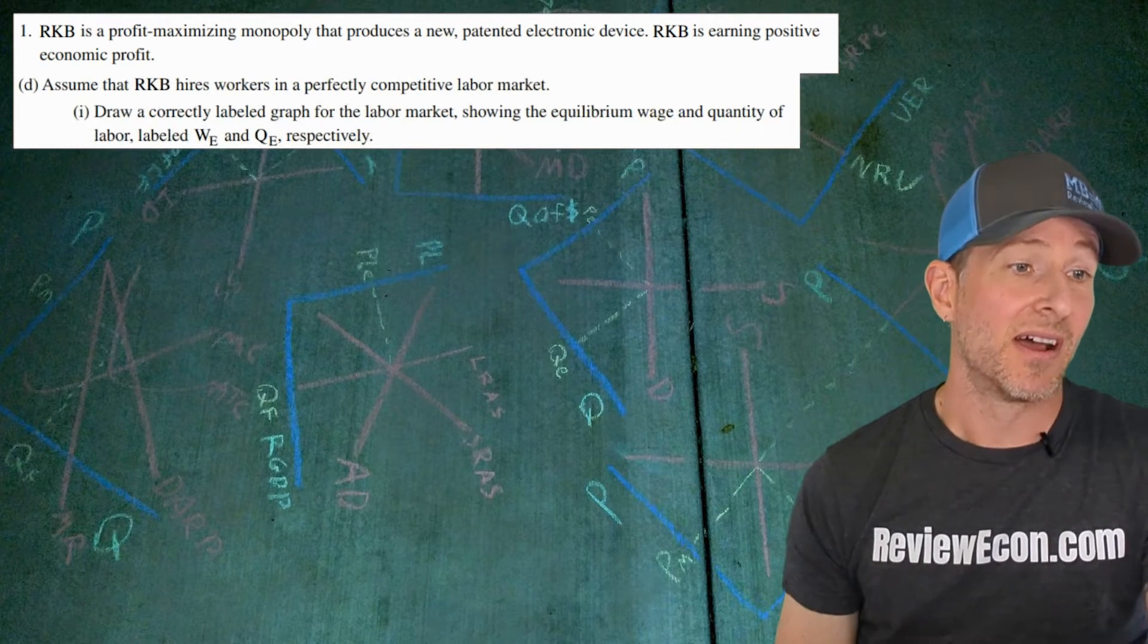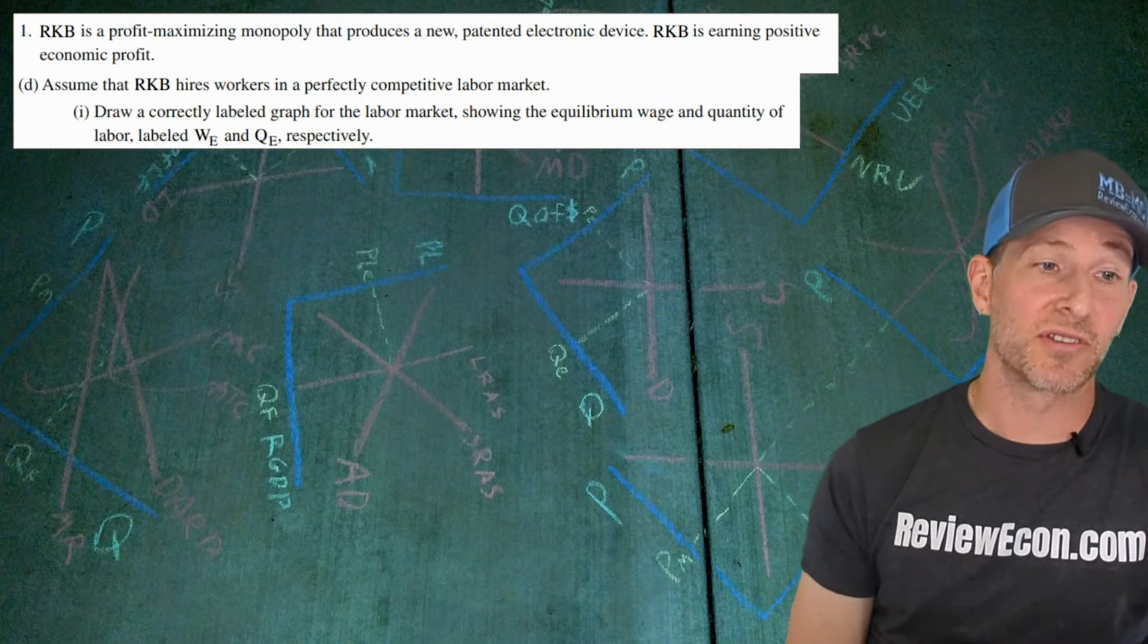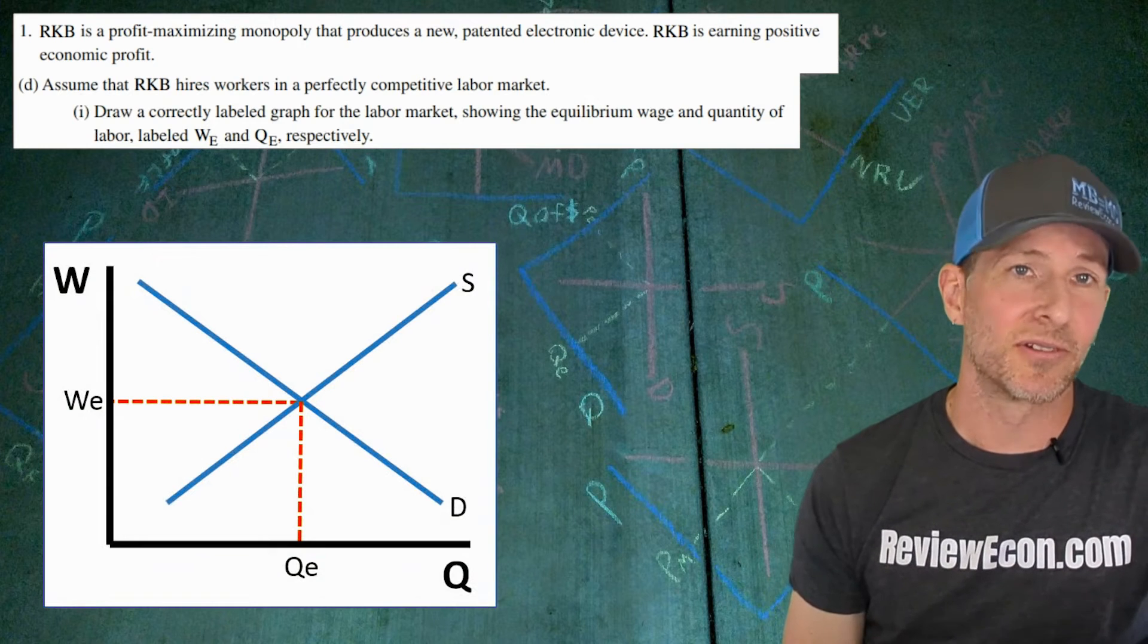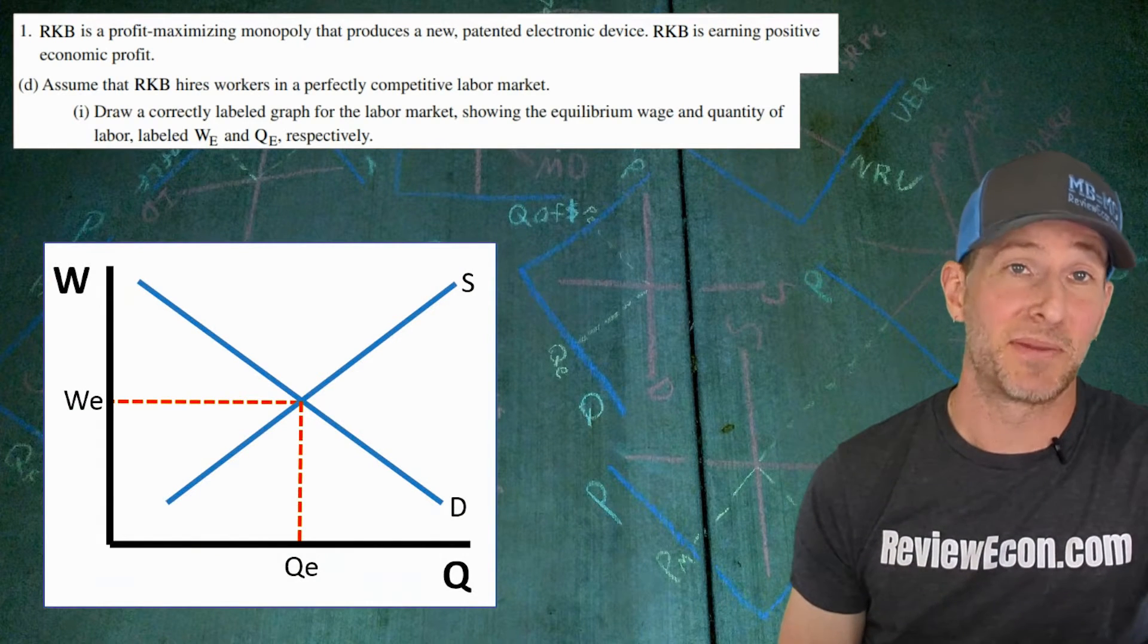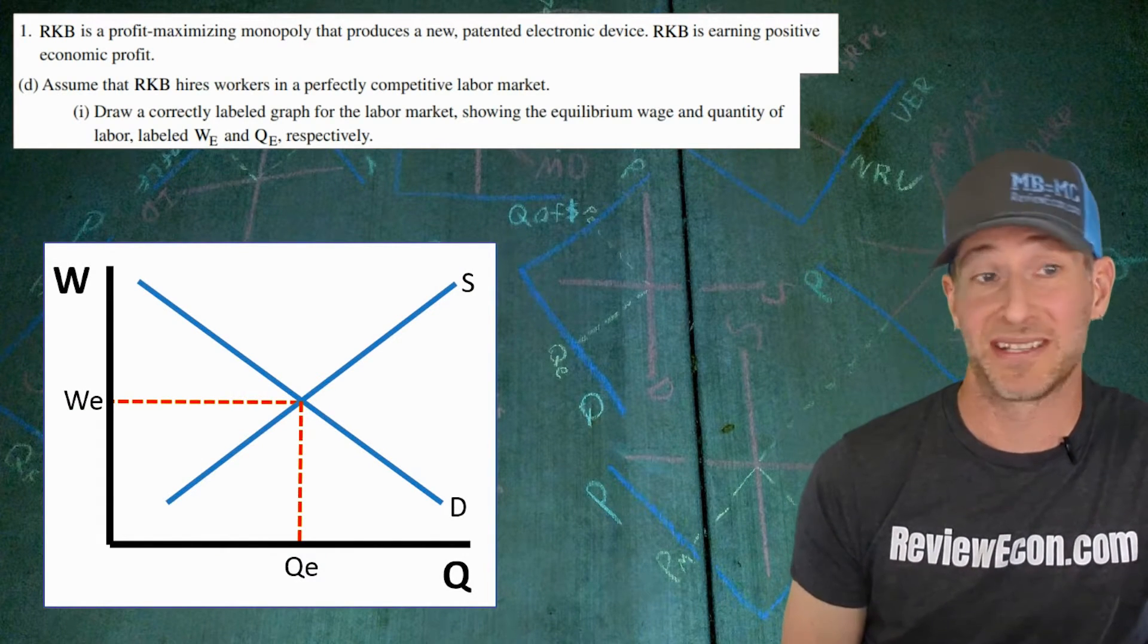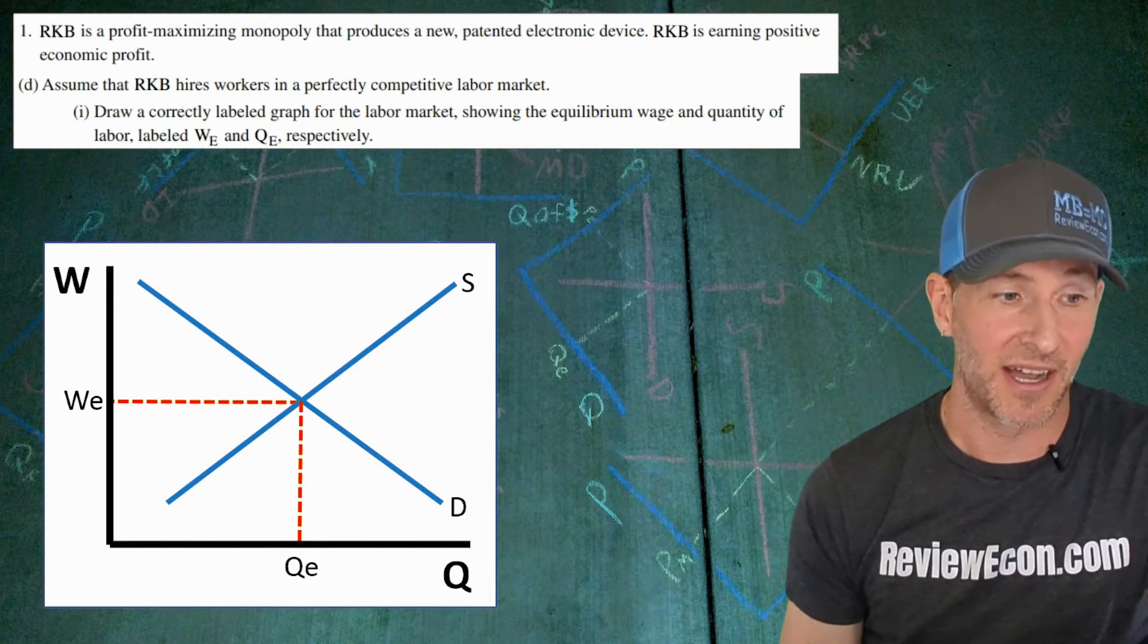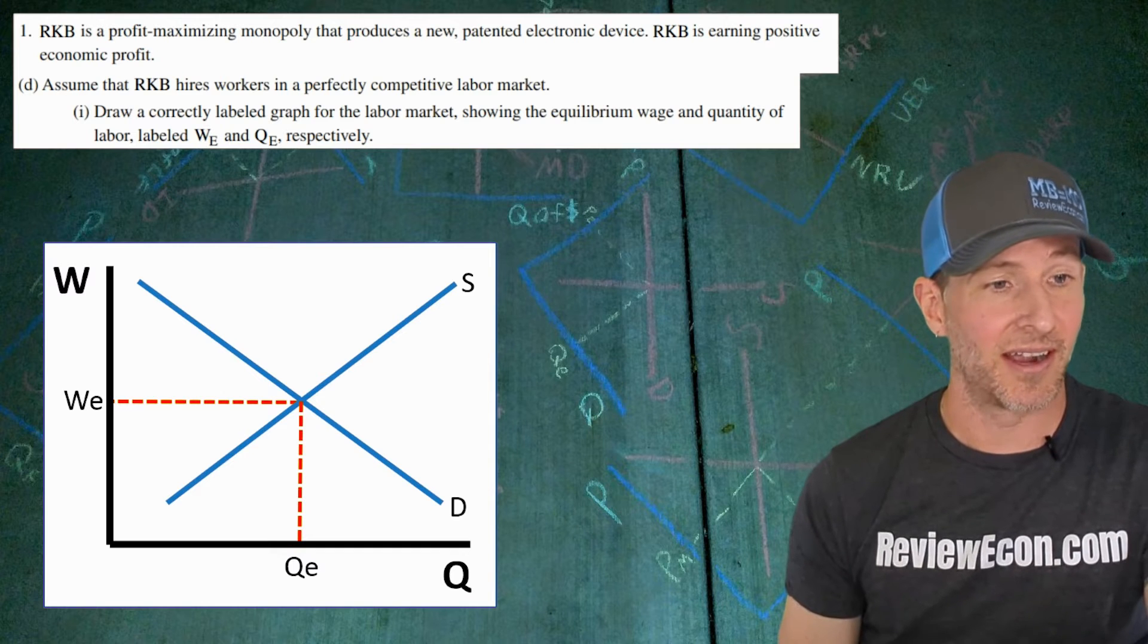Moving on to the next part. Assume that RKB hires workers in a perfectly competitive labor market. We're going to draw that labor market. Here we go, there it is. It's just a regular old supply and demand graph. I think some people might've been confused and maybe drew the firm instead, but nope, just regular old downward sloping demand, upward sloping supply with the equilibrium here marked.